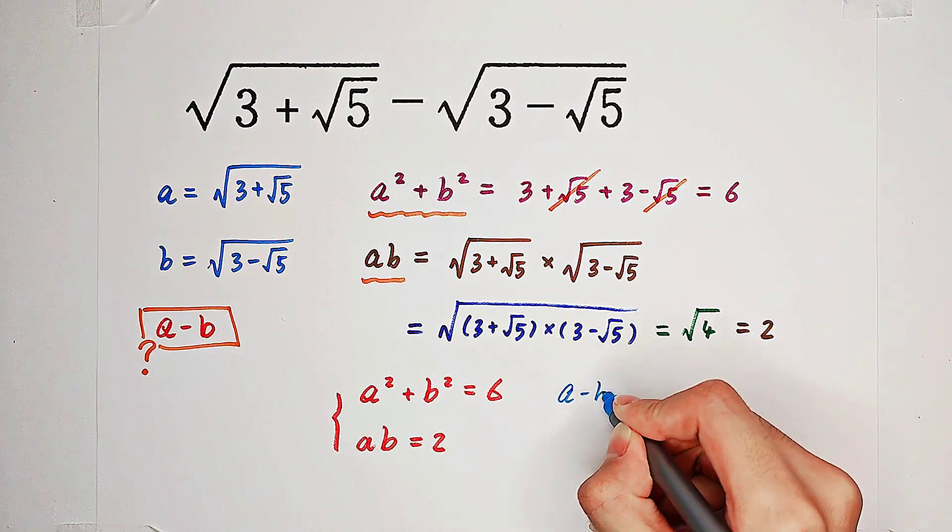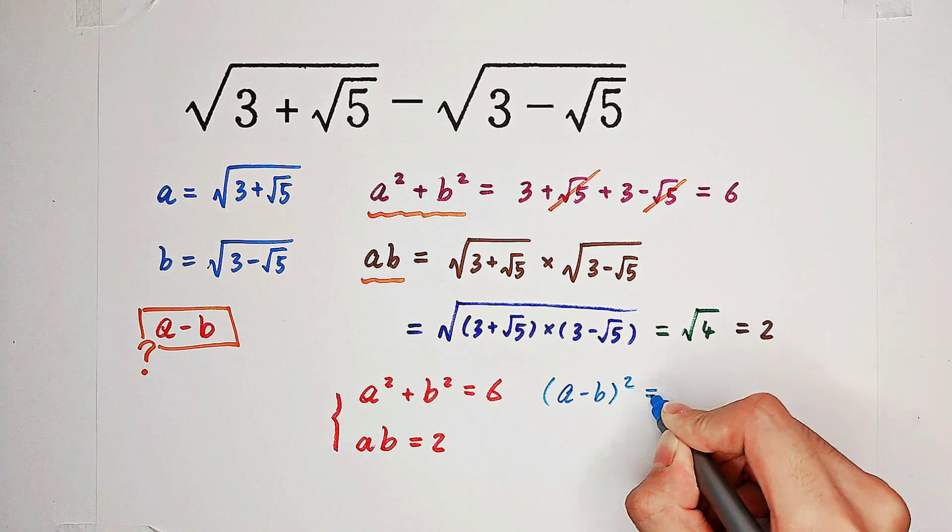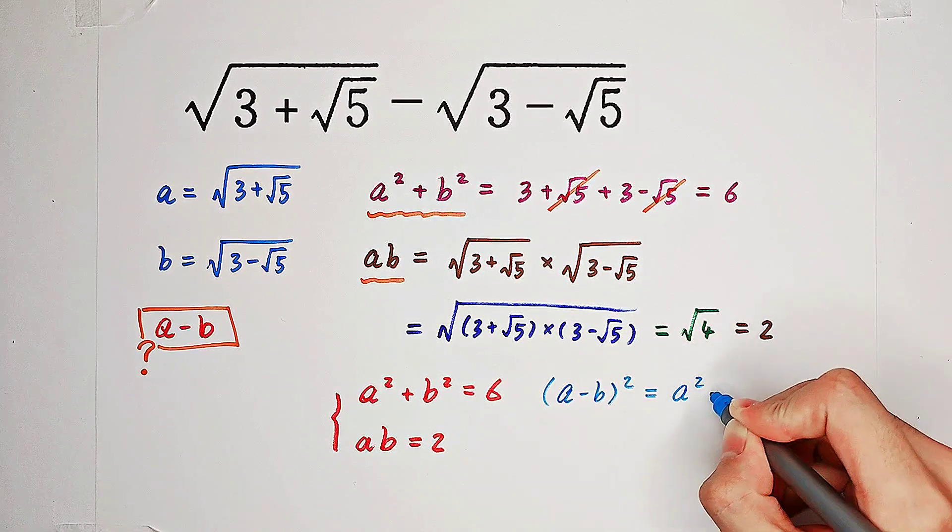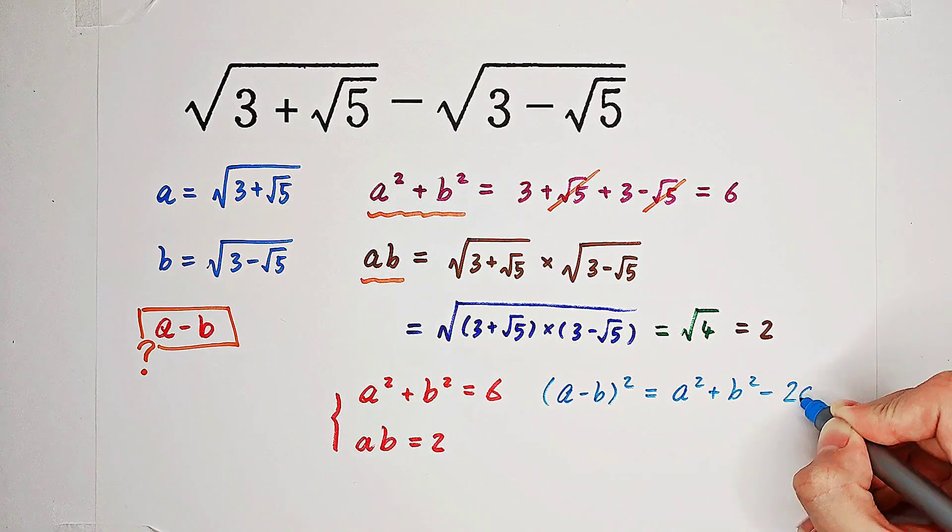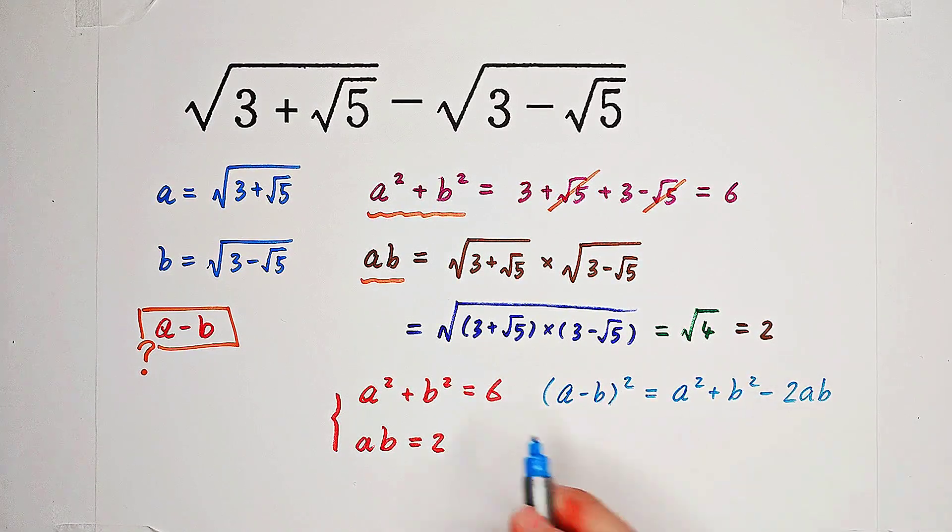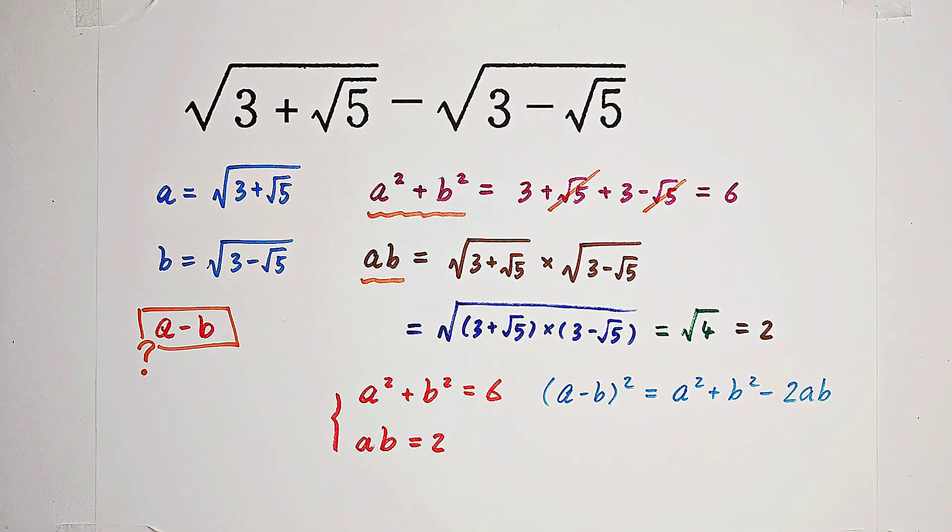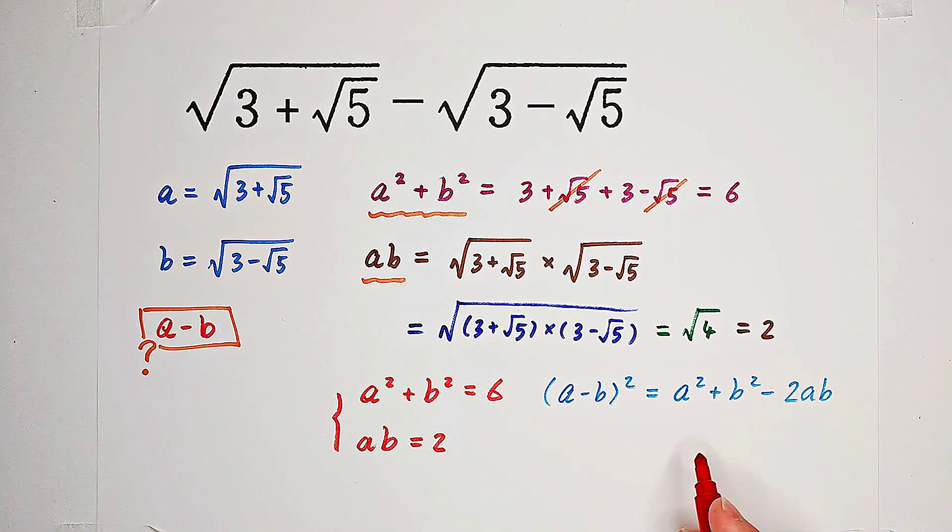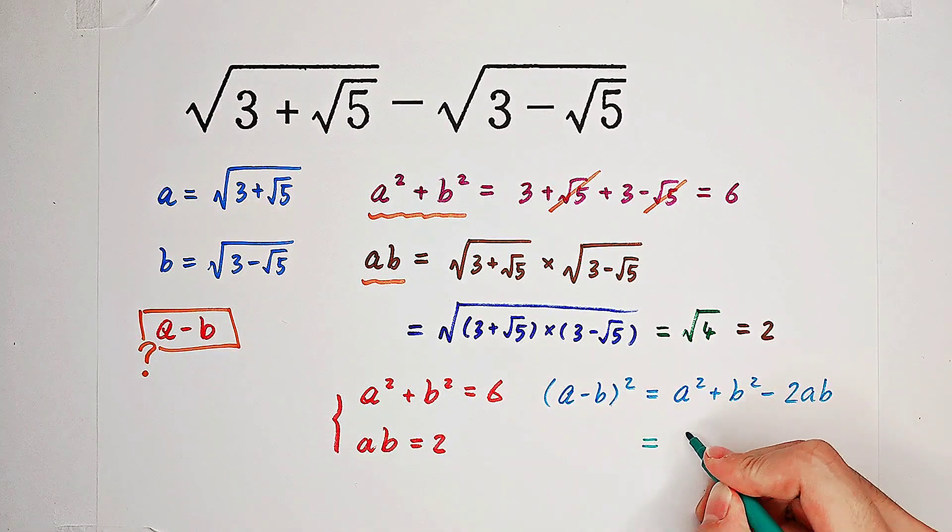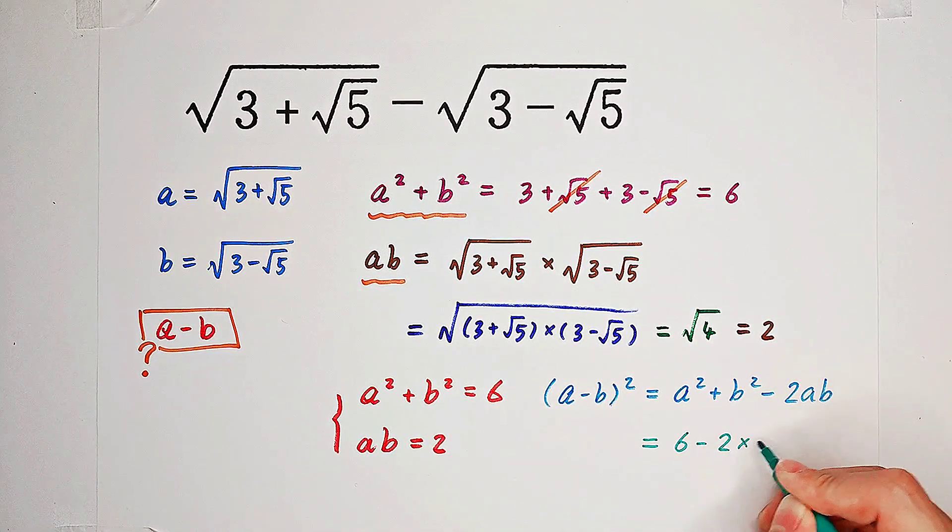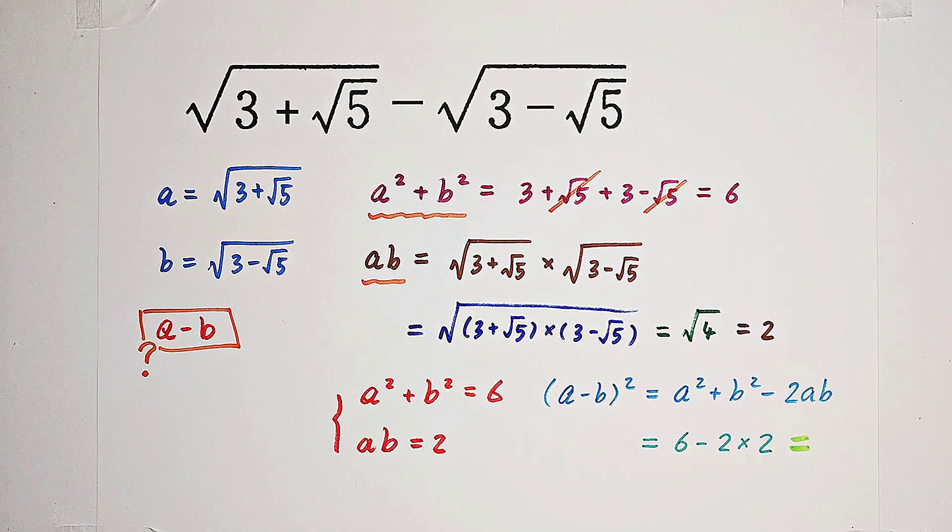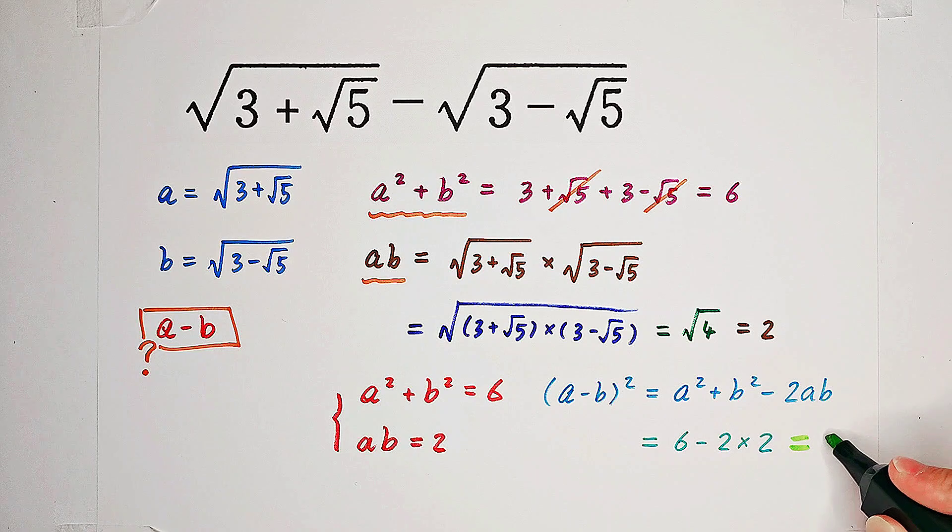If we square a minus b, so we have a minus b all squared. It is a squared plus b squared minus 2ab. And we already know that a squared plus b squared equals 6, and a times b is 2. So we just plug the numbers in, and 6 minus 2 times 2 is 2.